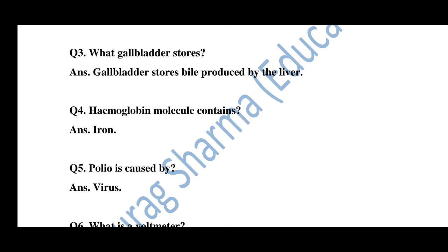Question number 3: What does the gallbladder store? Answer: The gallbladder stores bile, which is produced by the liver. Question number 4: What does the hemoglobin molecule contain? Answer: Iron. Question number 5: Polio is caused by? Answer: Virus.